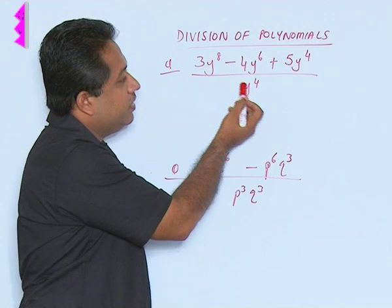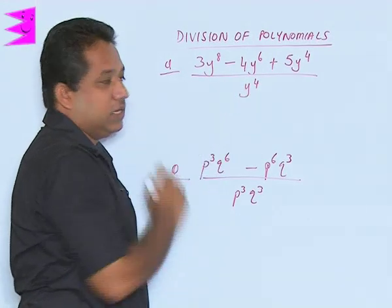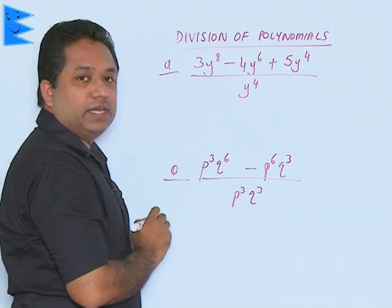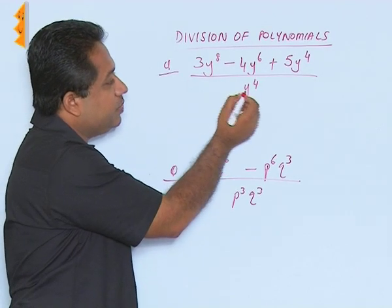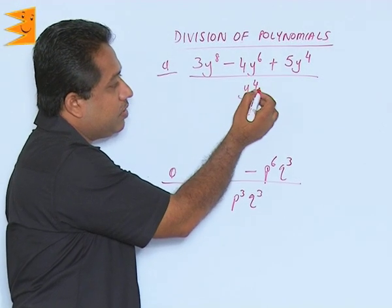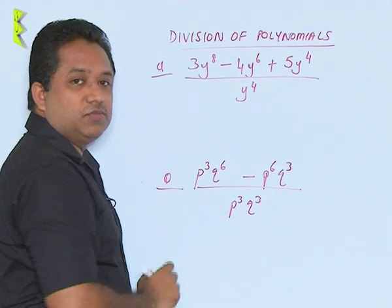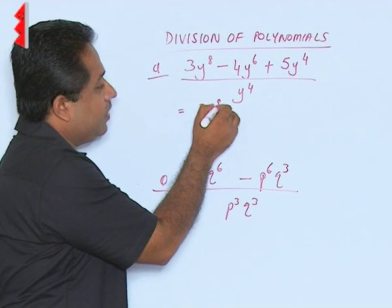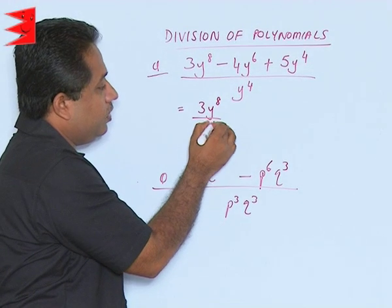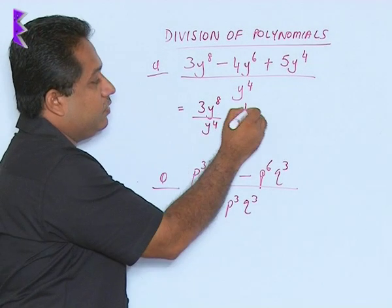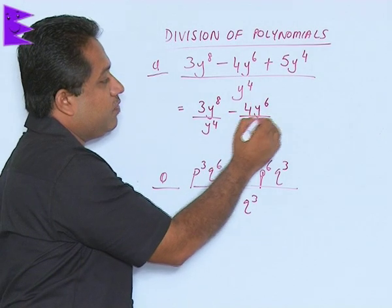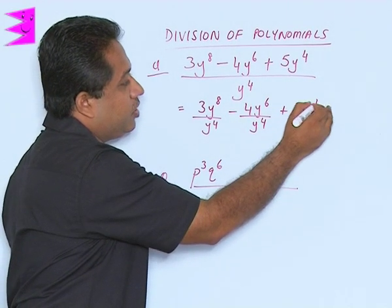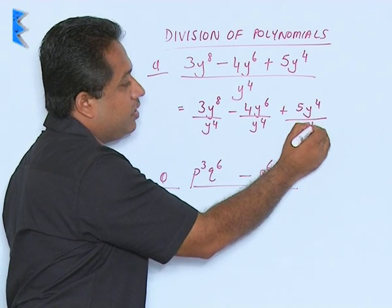Here we find that y⁴ is a monomial. In this type of question we will have to separate the terms. Separating the terms means this denominator y⁴ is for all the three terms of the numerator. So we can write this as 3y⁸ upon y⁴, minus 4y⁶ upon y⁴, plus 5y⁴ upon y⁴.